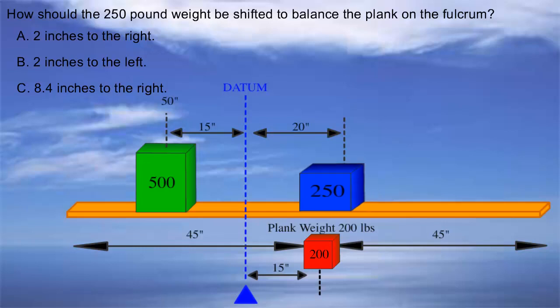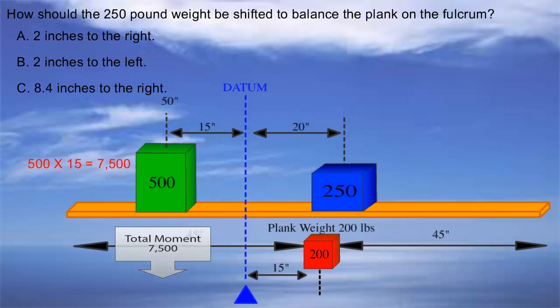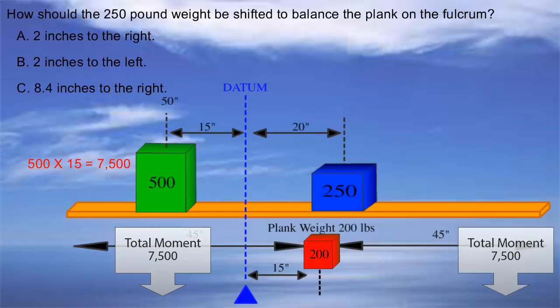Because we need to shift the weight on the right side, let's start calculating the moment from the left. The 500 lb weight's moment is 7,500, found by multiplying it by 15 inches. So the total moment on the left side of the fulcrum is 7,500, which needs to be equal to the one on the right. Now the plank is in a fixed position, so let's calculate its moment, 200 times 15 equals 3,000. Let's subtract that from the total moment of 7,500, and we are left with 4,500.